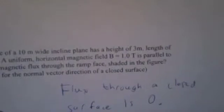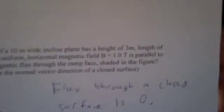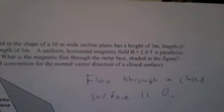As you can see right here, triangular solid in the shape of a 10 meter wide inclined plane has a height of 3 meters, length 4 meters, and a ramp length of 5 meters. A uniform horizontal magnetic field of B equals 1 tesla is parallel to the 4 meter length. What is the magnetic flux through the ramp face stated in the figure? Use the standard convention for the normal vector direction of a closed surface.